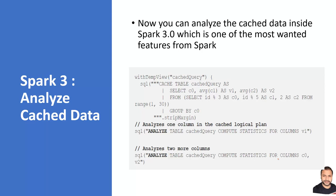Another small but handy feature in Spark 3 is related to the ANALYZE command used for adaptive query planning and cost-based optimization. Previously, this analysis could only be run on regular tables, but now it can also be performed on cached queries and cached data. The updated ANALYZE syntax supports statistical analysis on both cached tables and normal tables.